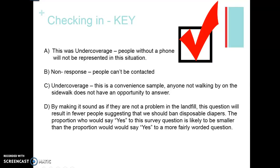Number one was under coverage — anyone without a phone couldn't be represented. Number two was non-response — people could not be contacted. Remember, non-response means they're pre-chosen to be part of the sample but couldn't be contacted or refused to answer. Letter C was under coverage — it's a convenient sample, as anyone not walking by on the sidewalk doesn't have the opportunity to answer. Letter D involves question wording: the phrasing makes the landfill sound unproblematic, so the proportion saying yes would be smaller than if a more fairly worded question were used.